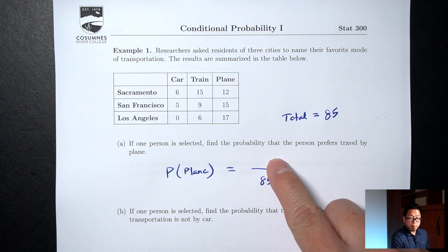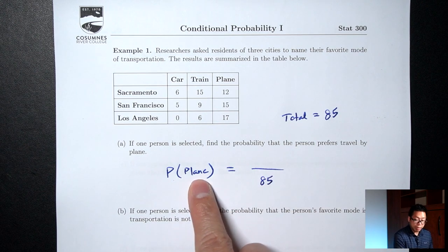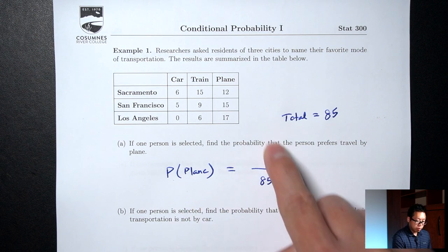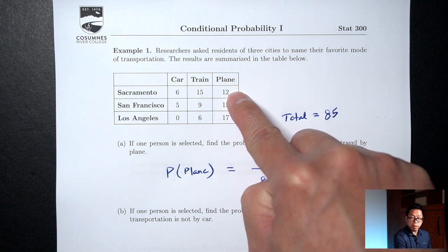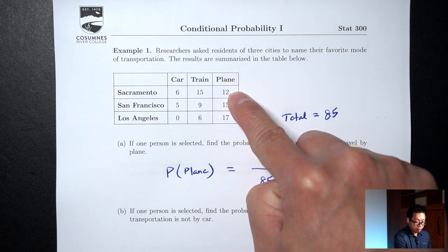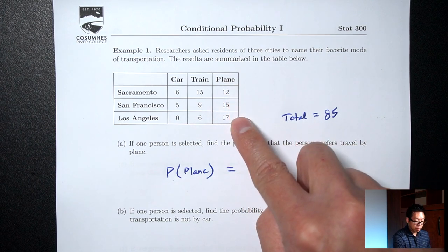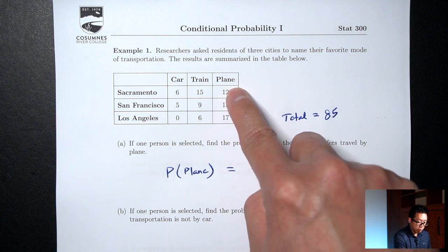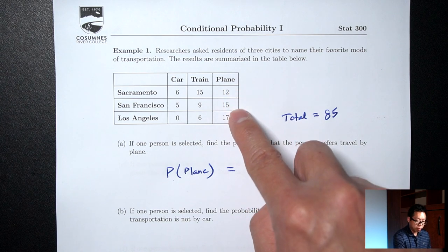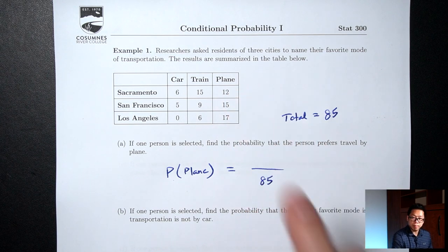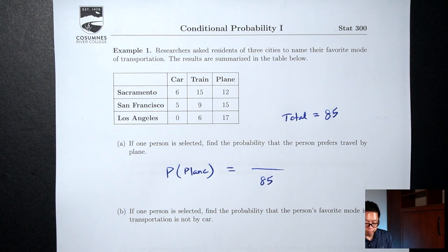For the top, how many people said plane was their favorite? These 12 people said plane, also these 15 people said plane, and these 17 people also said plane. So 12 plus 15 plus 17 equals 44.